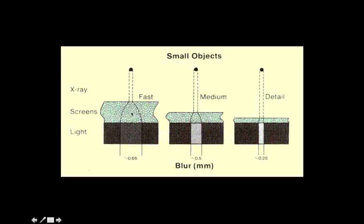A very fast screen tends to be thicker because it absorbs more x-rays, and the thicker the screen, the more opportunity for divergence before the light reaches the film. For a medium object we use a medium screen to minimize that effect on spatial resolution. When focusing on fine details like in mammography, we use a very small screen. We balance speed versus how much spatial resolution we are losing depending on the application.